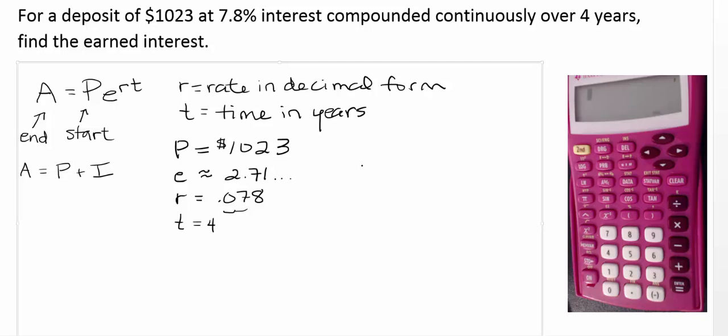So we're going to plug in. And we have A is equal to 1,023. Remember, if there's a number in front of a variable, or in this case, the constant letter E, that's implying multiplication. Don't always write it, but it's there.